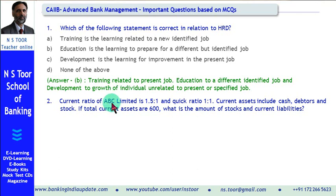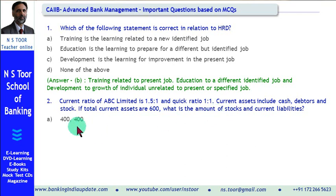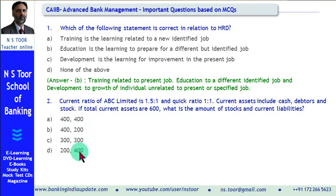Now let us look at the second question. The current ratio of ABC Limited is 1.5:1 and the quick ratio is 1:1. Quick current assets include cash, debtors, and stock. If total current assets are 600, what is the amount of stock and current liabilities? The options are: (A) 400 and 400, (B) 400 and 200, (C) 300 and 300, and (D) 200 and 400.